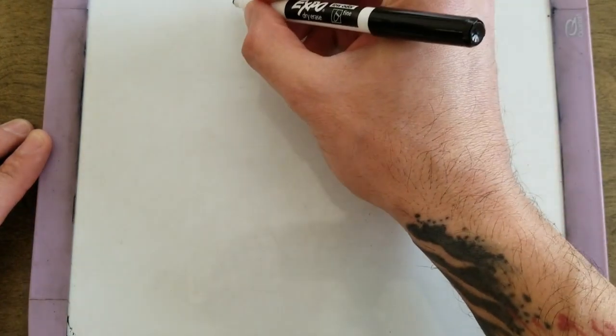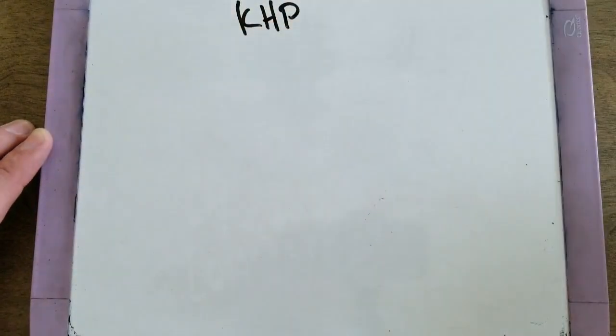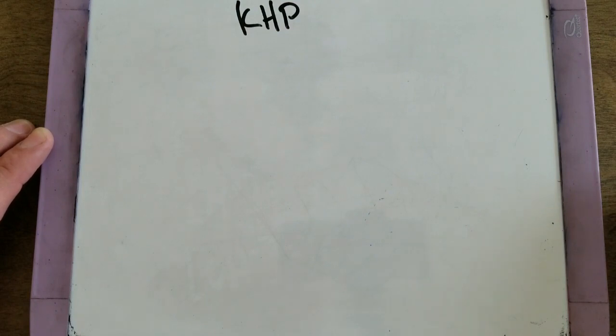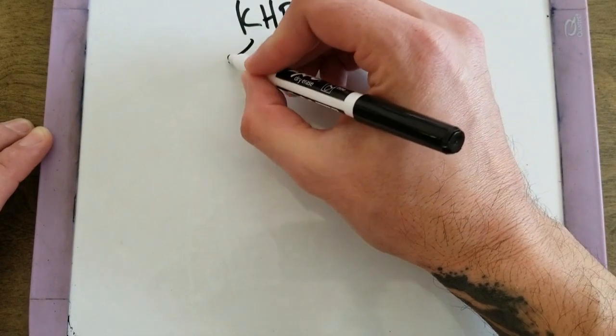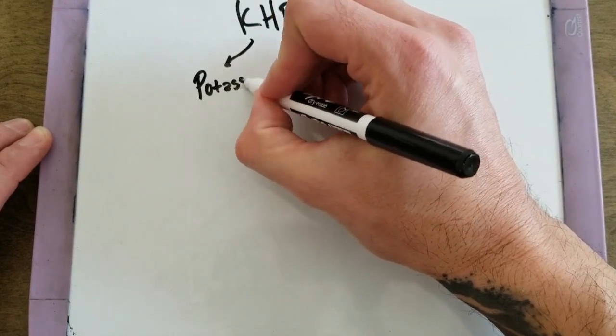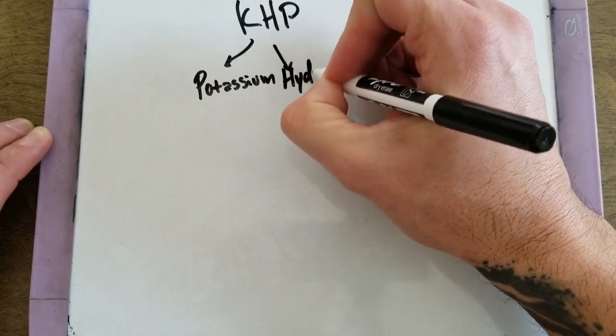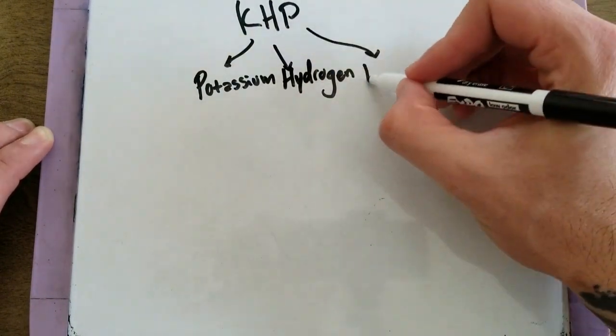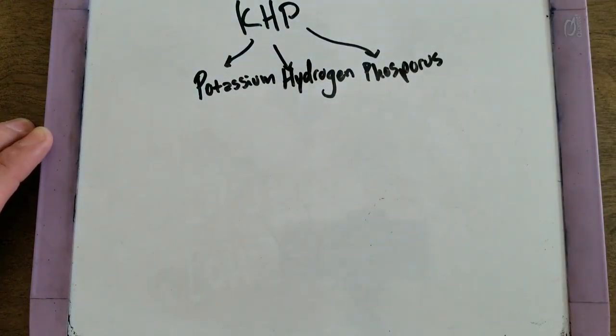In this experiment, the acid that is being used to titrate is called KHP, which if you're thinking of elements, you might assume stands for potassium, hydrogen, phosphorus.